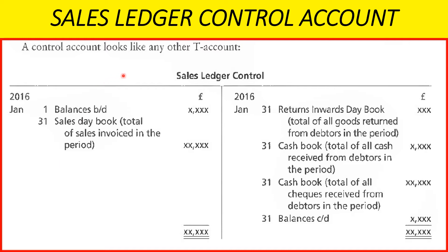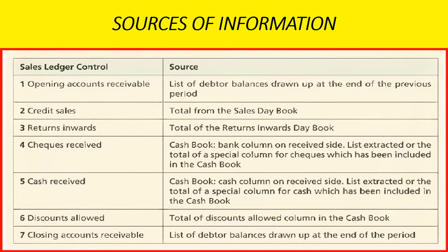A control account looks like any other T-account. The sales ledger control looks something like this. The information for it comes from your opening balance — the balance brought down — which comes from the previous period's debtor balances. Credit sales come from the total of the sales day book, and returns inwards come from the total of the returns inward journal.